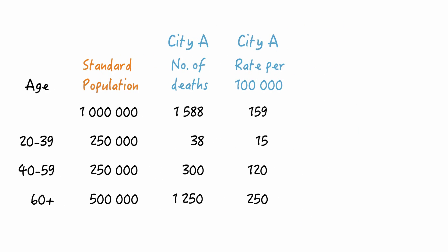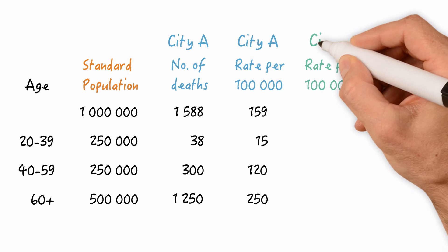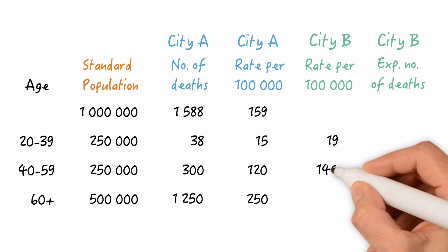Now, how many deaths would we expect if the age distribution was the same in city B as in city A? To answer this question, we need the age-specific death rates of city B and apply them to the age strata of our standard population.